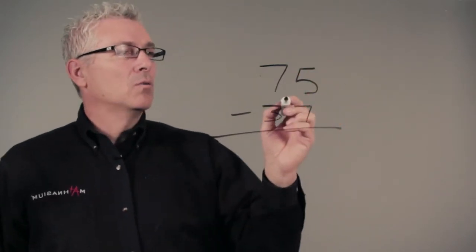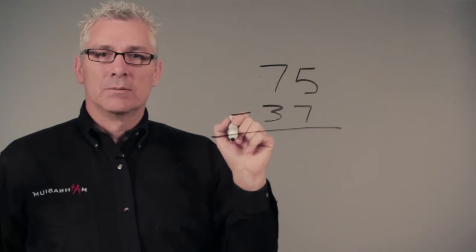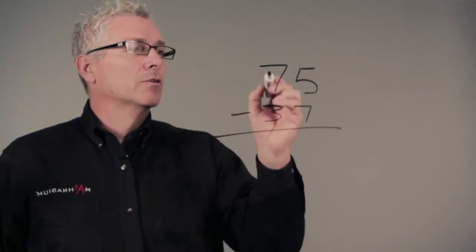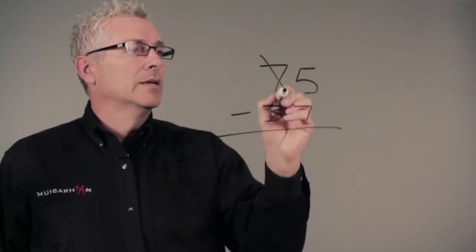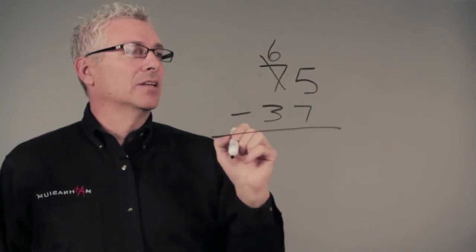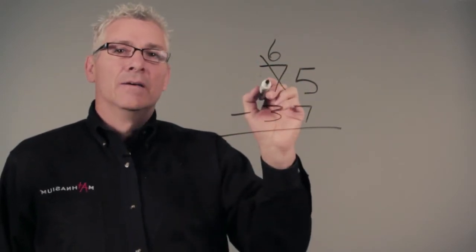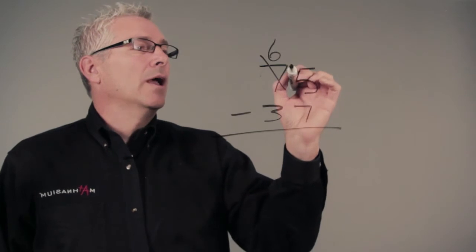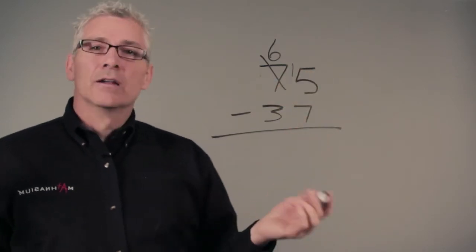Well, we can always borrow from the next place value over, or we can regroup, calling now this one is a 60 instead of a 70. And we take the 10 that we borrowed from our seven and we add it to our five, making it a 15.